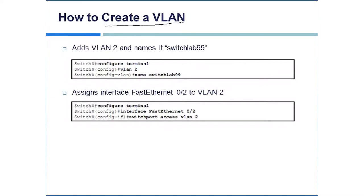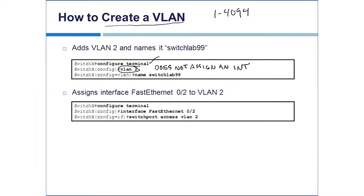When we create a VLAN, the actual syntax and commands are very simple. VLANs can be any number from 1 to 4,094. You go into configuration mode and type the command VLAN with the VLAN number you want to create. Remember, this does not assign an interface — we still have to figure out how to assign an interface to the VLAN, which we'll see in just a couple of seconds.